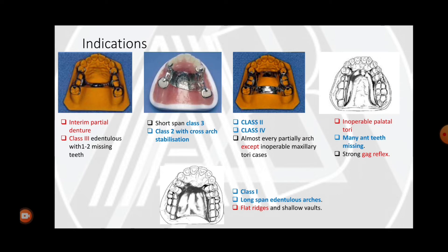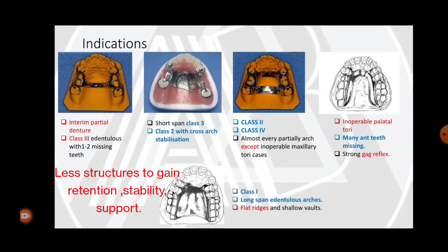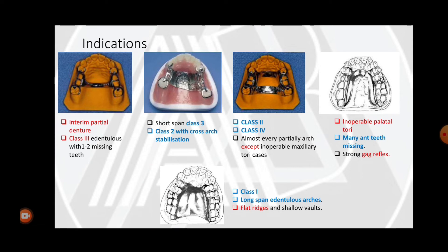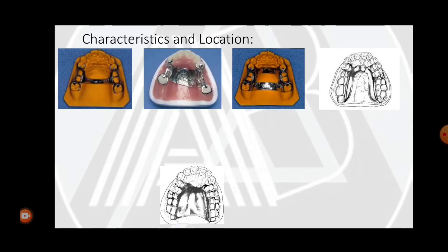The palatal plate type of maxillary major connector is used in Class 1 (bilateral edentulous arches), long-span edentulous arches, flat ridges, and shallow palatal walls. Complete palatal coverage is indicated when fewer teeth are present and ridges are resorbed, so that adequate retention, support, and stability can be gained by covering more of the edentulous arch.